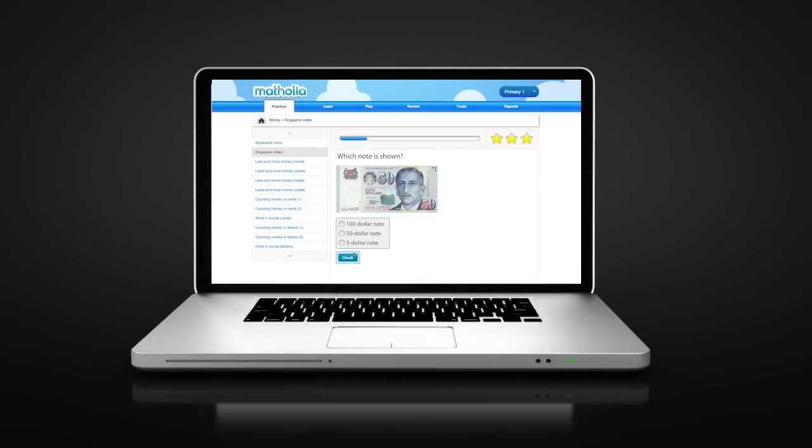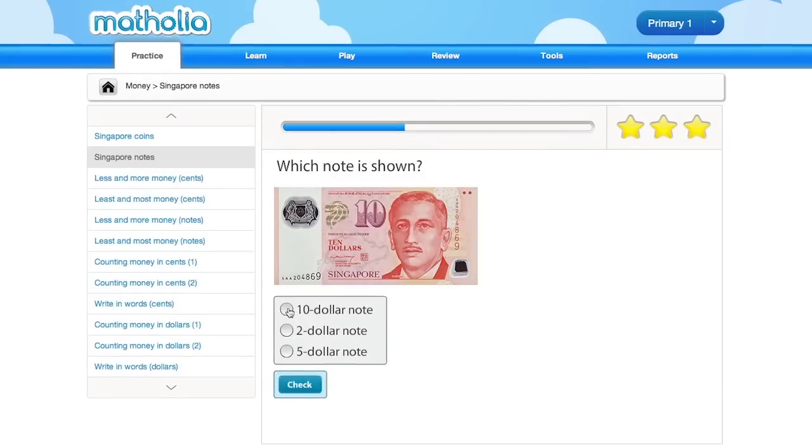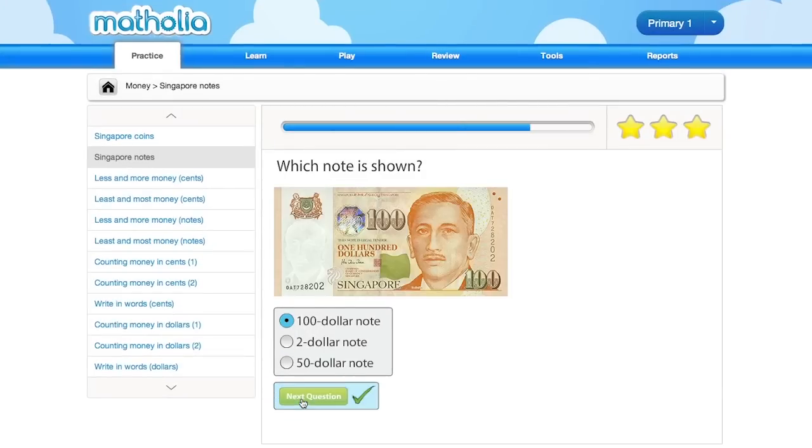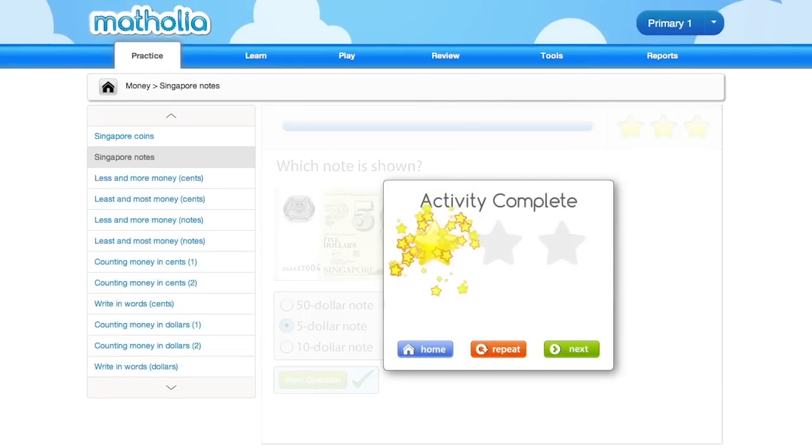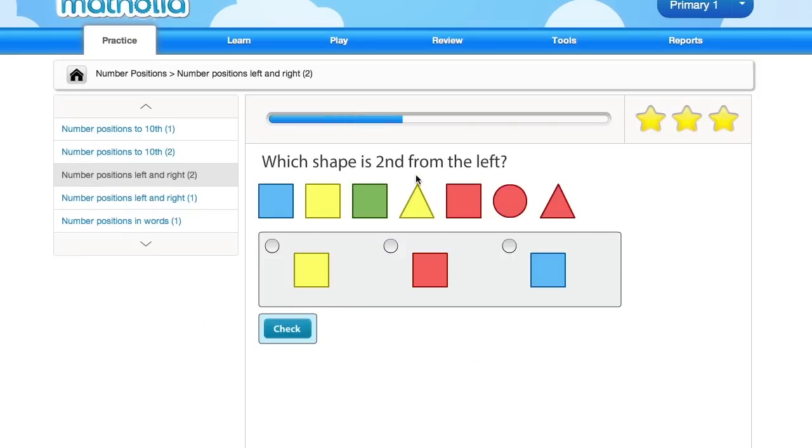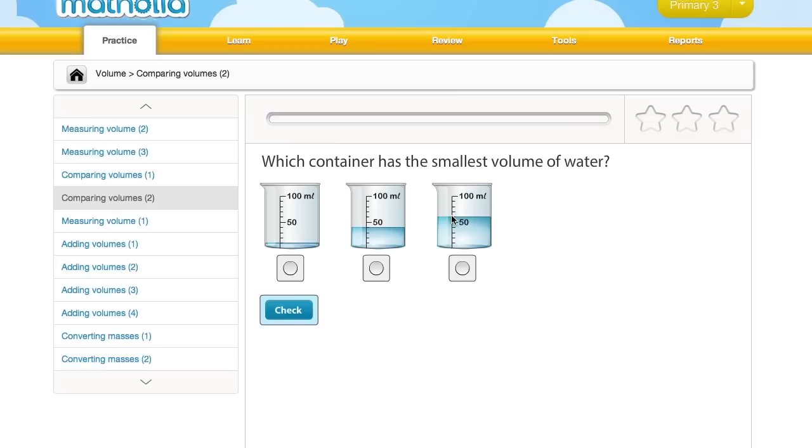In building Matholia, we began by breaking down the MOE Mathematics syllabus into practice modules. Each module addresses a specific learning area, concept or skill from the syllabus.